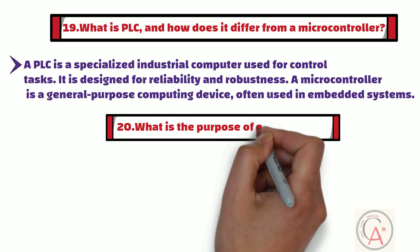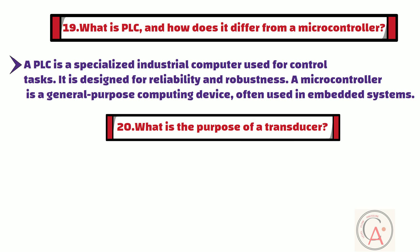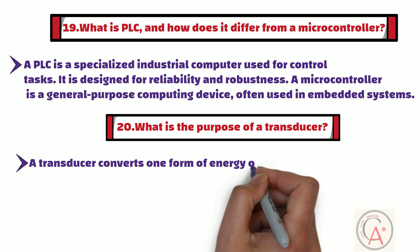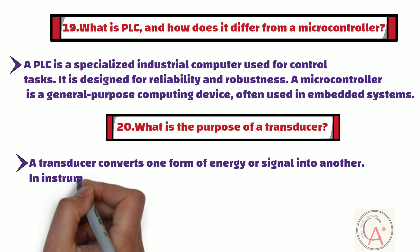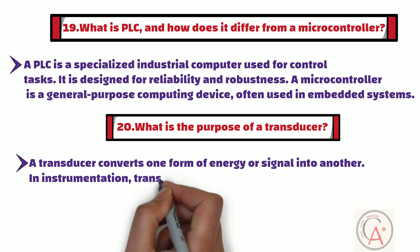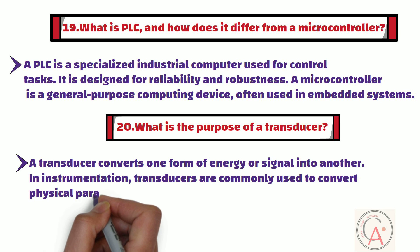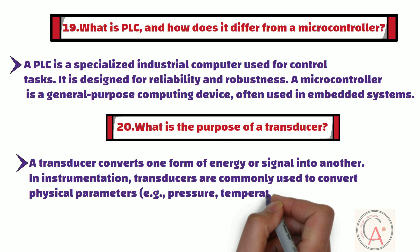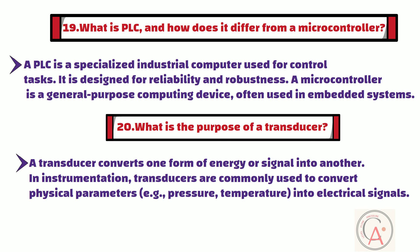The 20th question is: what is the purpose of a transducer? A transducer converts one form of energy or signal into another. In instrumentation, transducers are commonly used to convert physical parameters such as pressure, temperature, level, and flow into electrical signals.